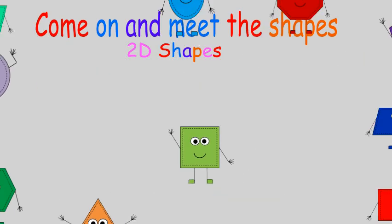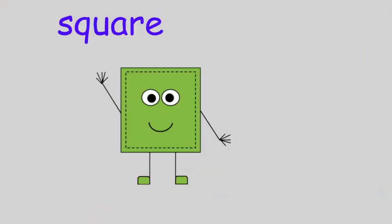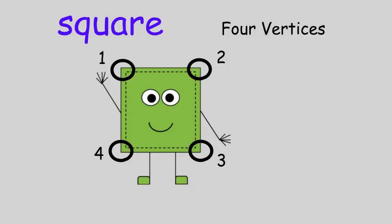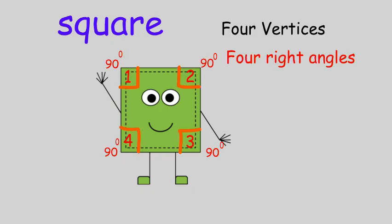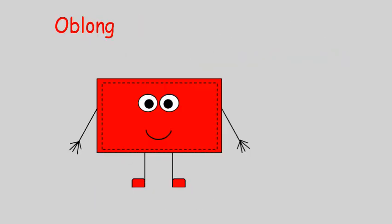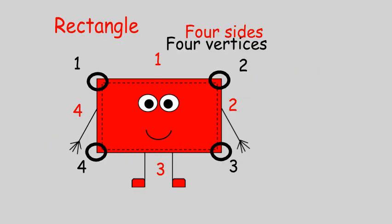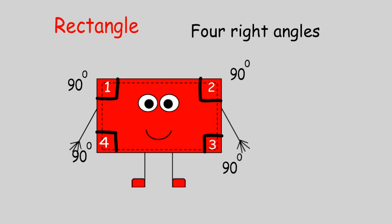The square has four equal sides, four vertices, four right angles inside. The oblong — it's a rectangle — has four sides, two short, two long. Four vertices, two pairs of parallel sides, with four right angles on the inside.